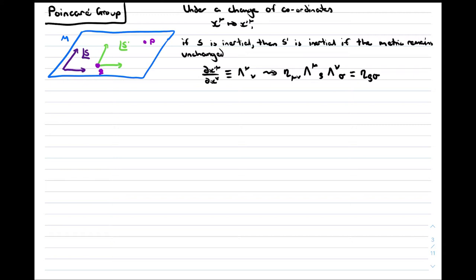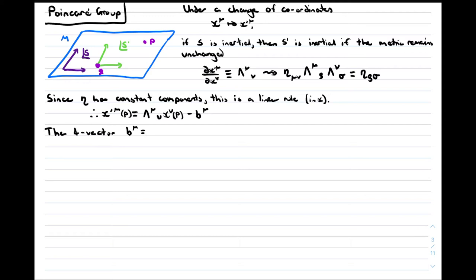We define the Jacobian matrix to be λ^μ_ν. Since η has constant components, this is at most a linear polynomial in X. So we write X'^μ(P) equals λ^μ_ν X^ν(P) minus b^μ. The translation vector b^μ is the position of the origin of S prime in S.